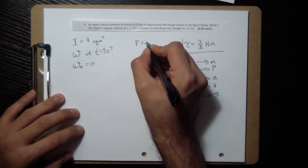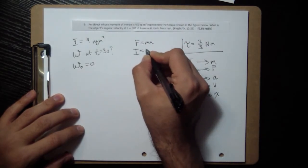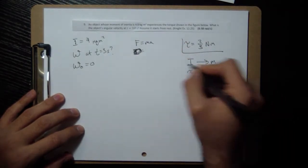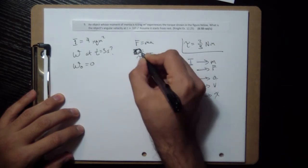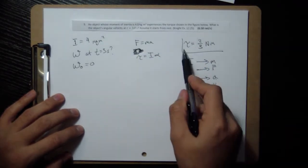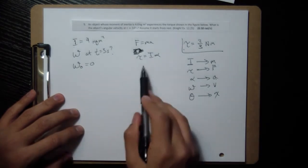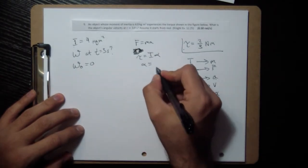So F equals MA becomes torque equals I alpha. So because I have torque and moment of inertia, I can figure out what my angular acceleration is. It's torque over moment of inertia.